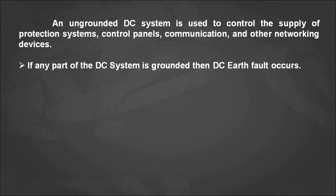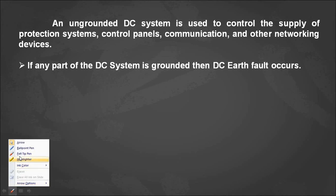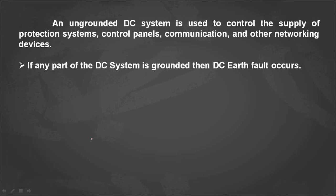An ungrounded DC system is used to control the supply of production systems, control panels, communication, and other networking devices. If any part of this system is grounded, then we say a DC fault has occurred. Generally, a battery bank is used as emergency or backup supply for an industry or power generating station. The battery bank is a combination of batteries depending upon the voltage required. Generally 220 volts DC is used in many industries, connected to two bus bars — one positive bus bar and one negative bus bar.